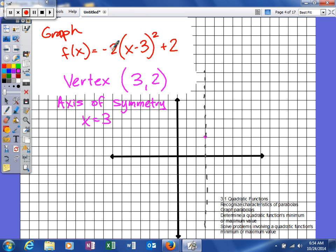So our a is negative 2. So what we would normally do now gets multiplied by negative 2. Remember that's what a does. It multiplies the y values. So normally when I go right 1, I go up 1. But 1 times negative 2 is negative 2. So now when I go right 1, I go down 2.